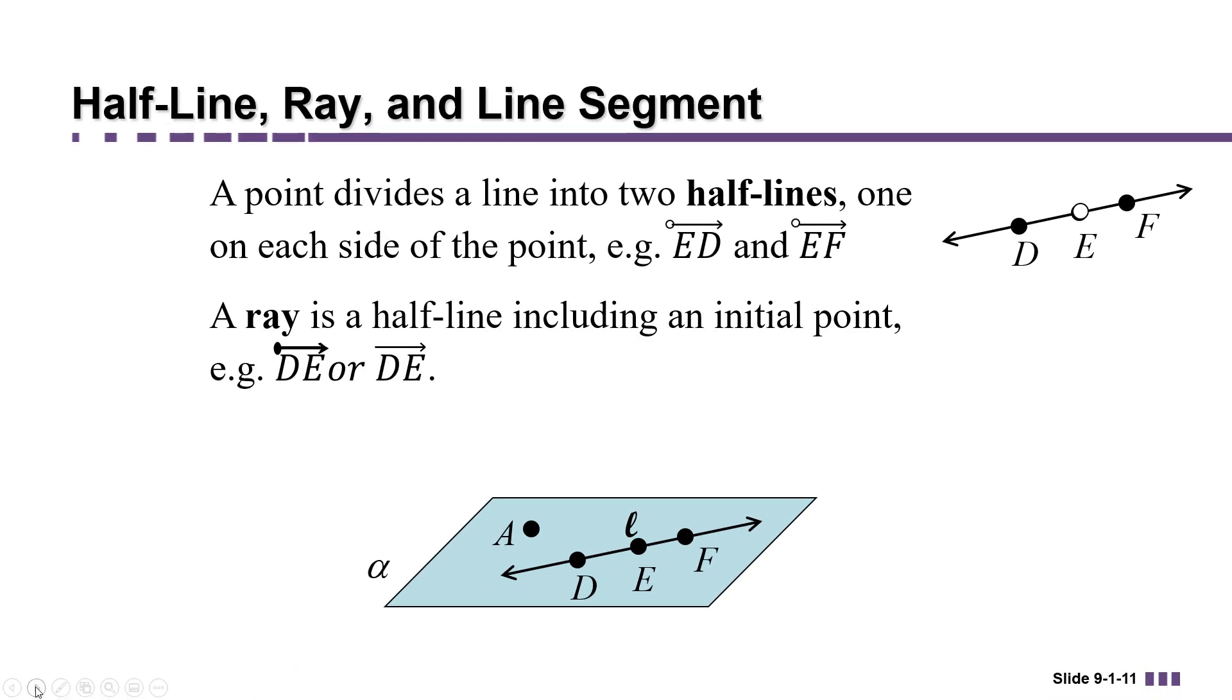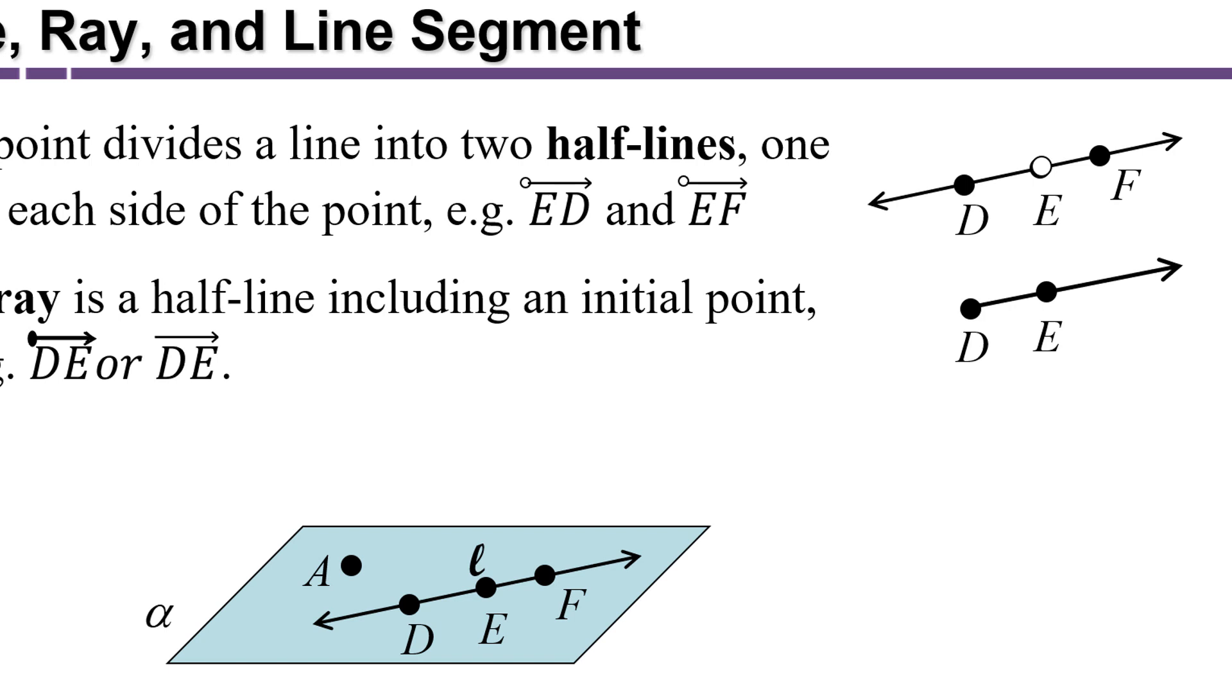A ray is a half line where you actually include that initial point. So, for example, the ray DE includes the end point D, but also all of the other points in the direction of E.